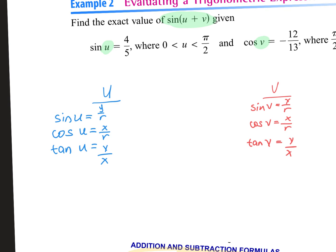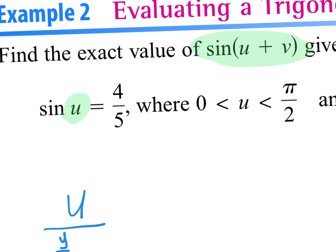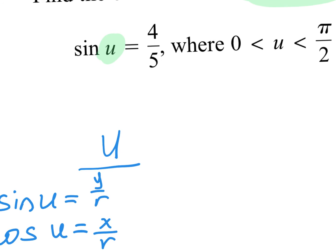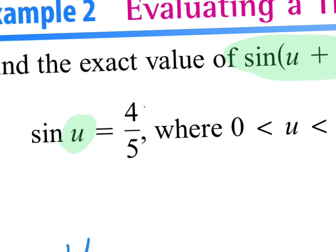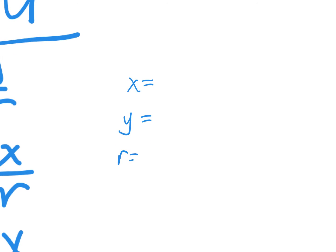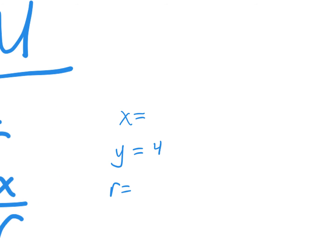When they told me that sine of U is 4 over 5, they're telling me two of those letters. What are they telling me? Sine is Y over R. They're telling me that Y is 4 and R is 5. So right away you can write down, I need X, I need Y, and I need R. I already know that Y is 4 and R is 5.